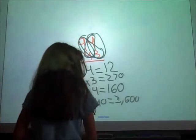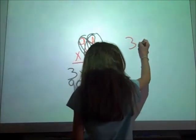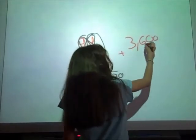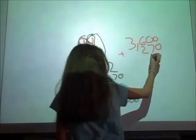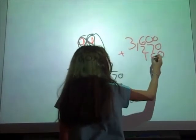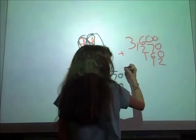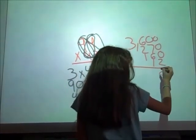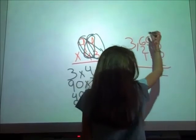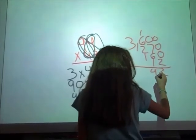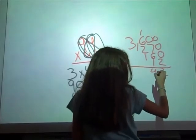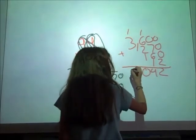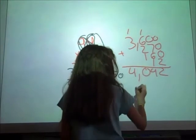Then multiply 40 times 400. 7 plus 6 plus 9 is 12, 6 plus 2 plus 1 plus 1 is 10, 3 plus 1 is 4, and that's the end.